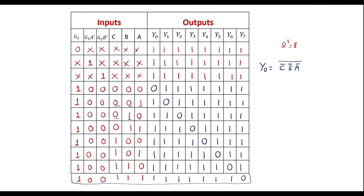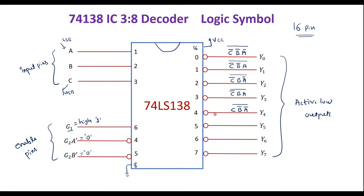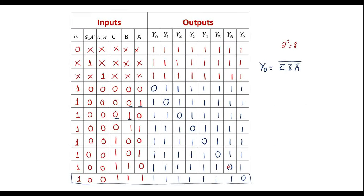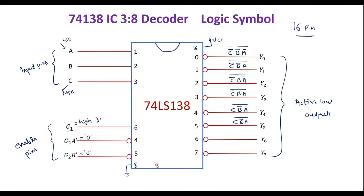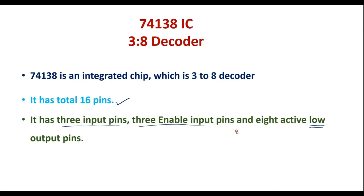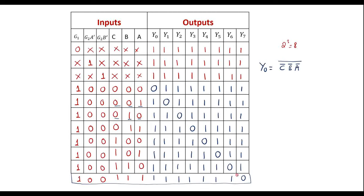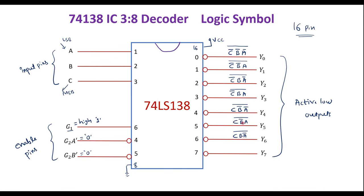For Y6 with inputs 110: Y6 = (CBĀ)̄. For Y7 with inputs 111: Y7 = (CBA)̄. These are the output equations for all 8 output lines of the 74138 3-to-8 decoder.